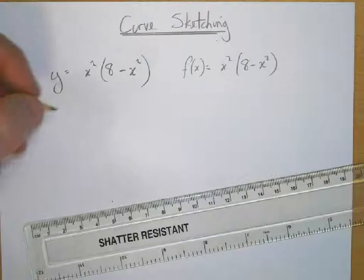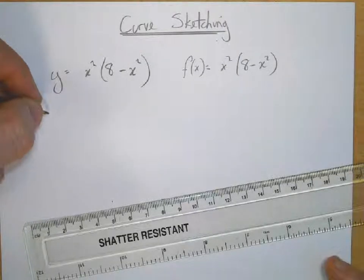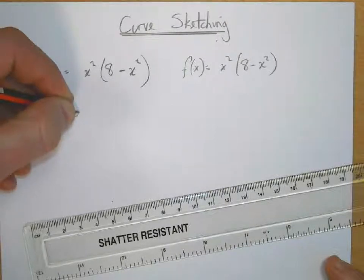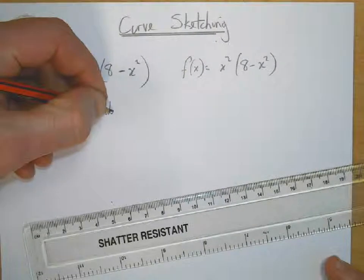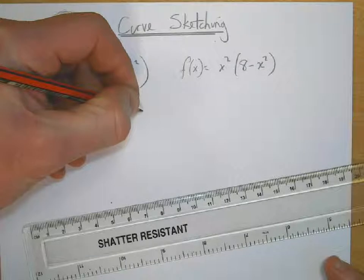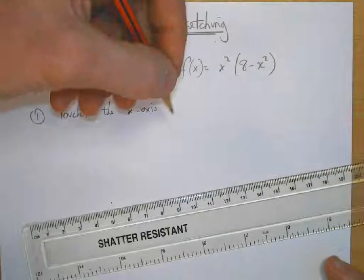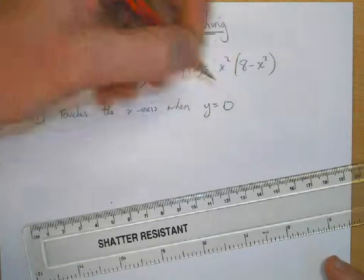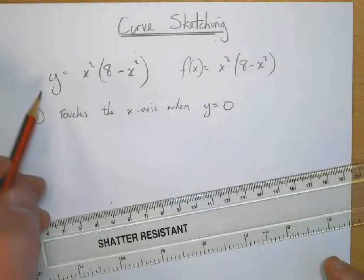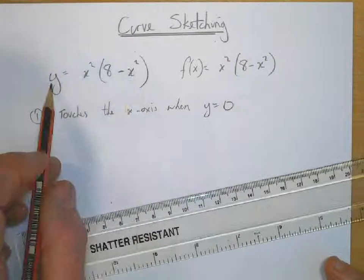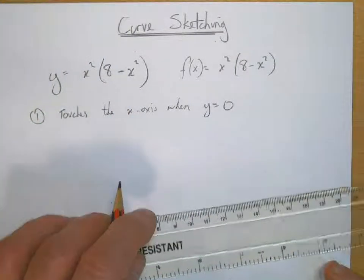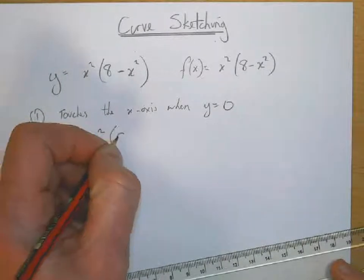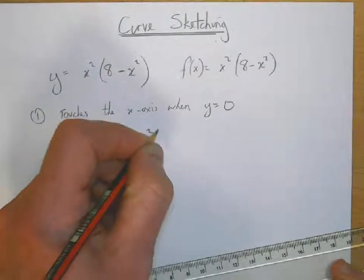First of all we'll find out when it touches the x-axis. So step 1: it touches the x-axis when y equals 0. So here we have our function — we're going to make y equal to 0 and then we'll be able to find when it touches the x-axis.